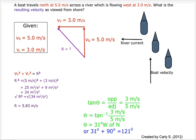A resultant can be calculated using the Pythagorean theorem in purple with an angle calculated in green.